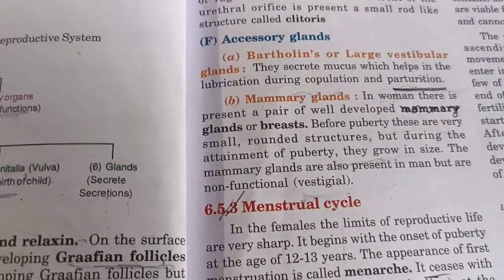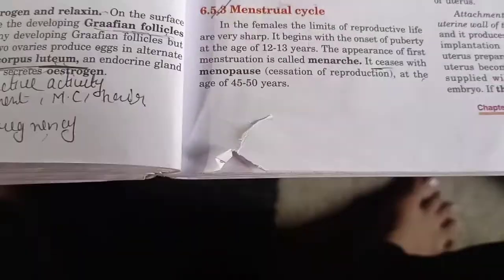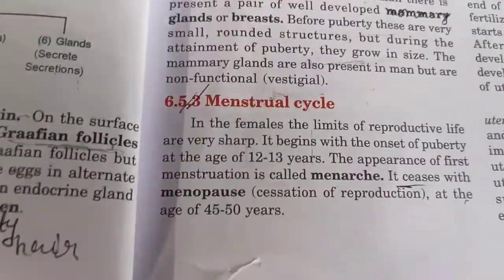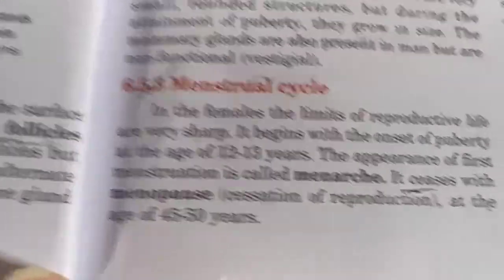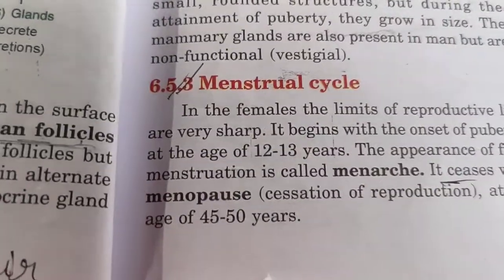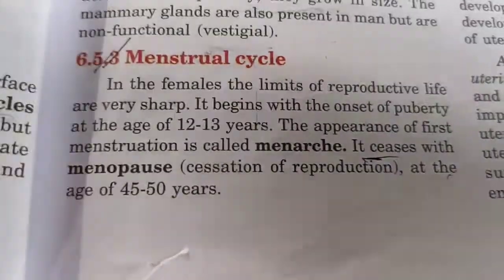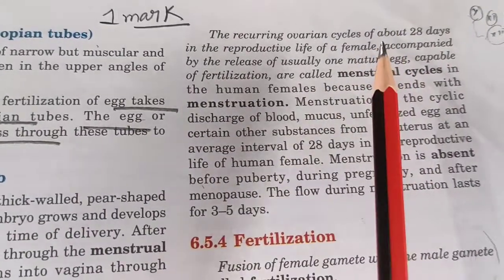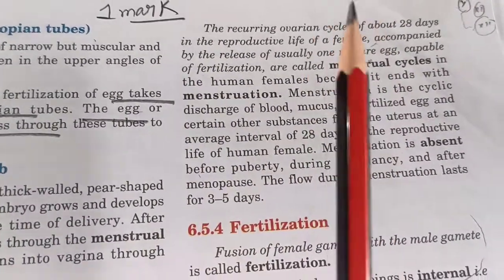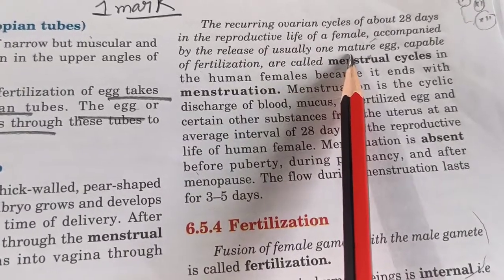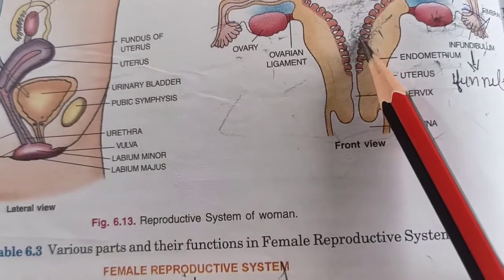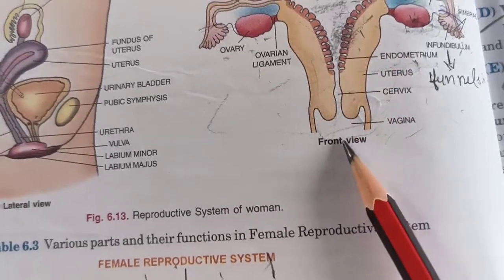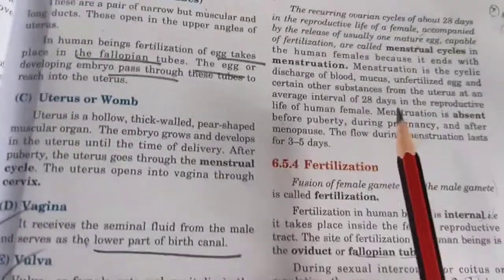That is all about the female reproductive system. Now we come to the next topic — the menstrual cycle, which is also part of the female reproductive system. The menstrual cycle is a cyclic process that occurs within 28 days. It happens when fertilization does not occur — when male and female sex cells do not fuse. When there is no fertilization, the endometrium layer degrades and comes out in the form of blood — that is the menstrual cycle.